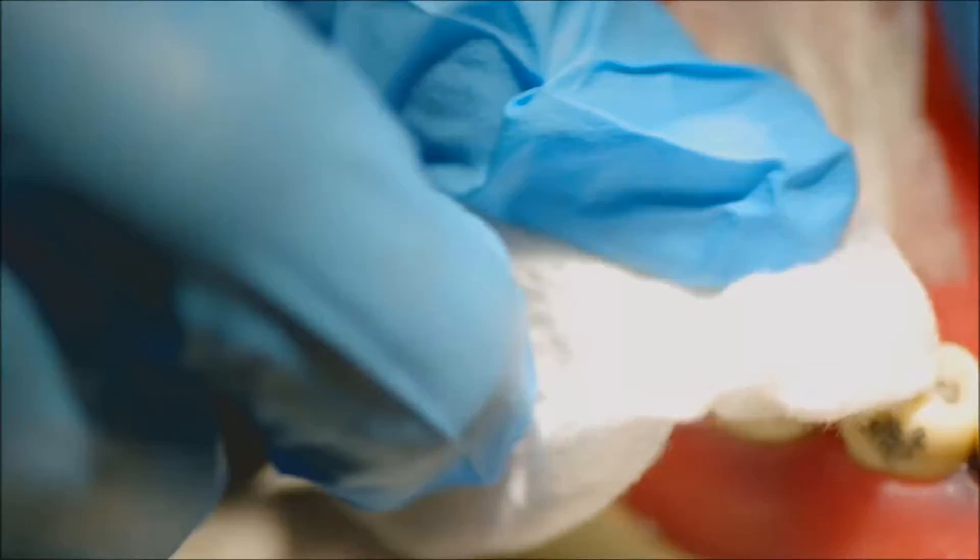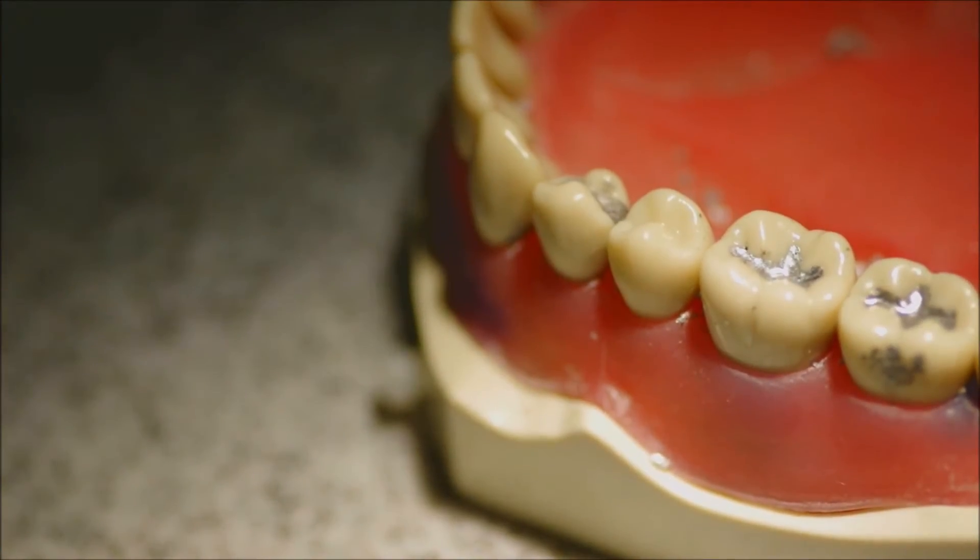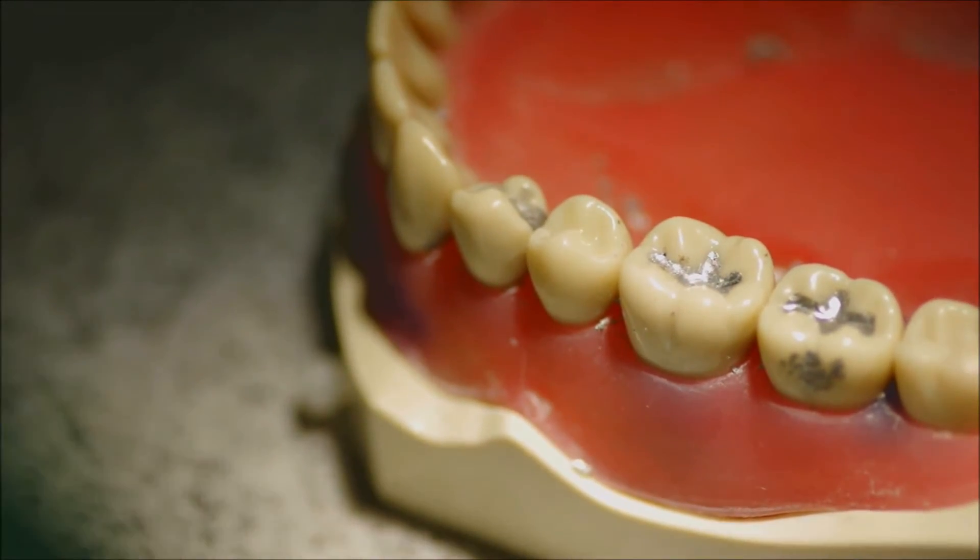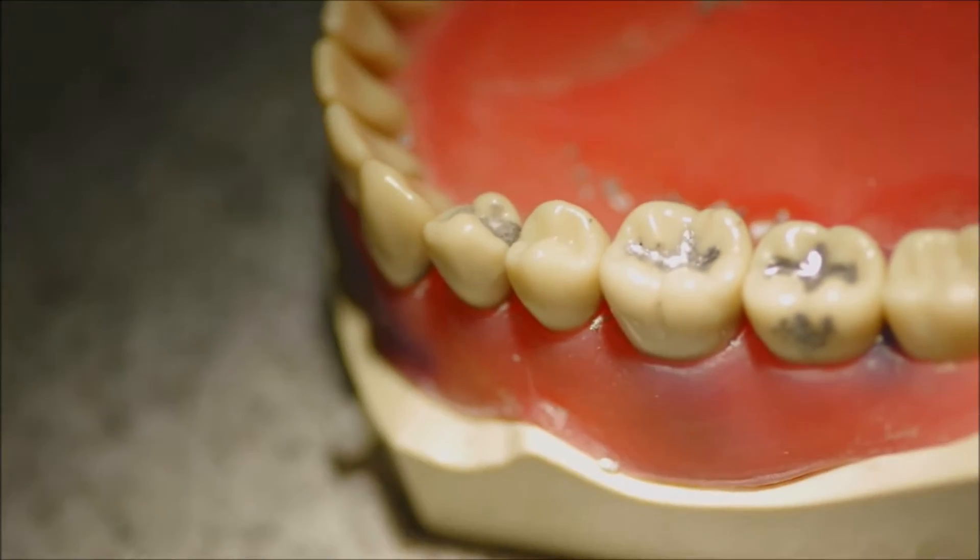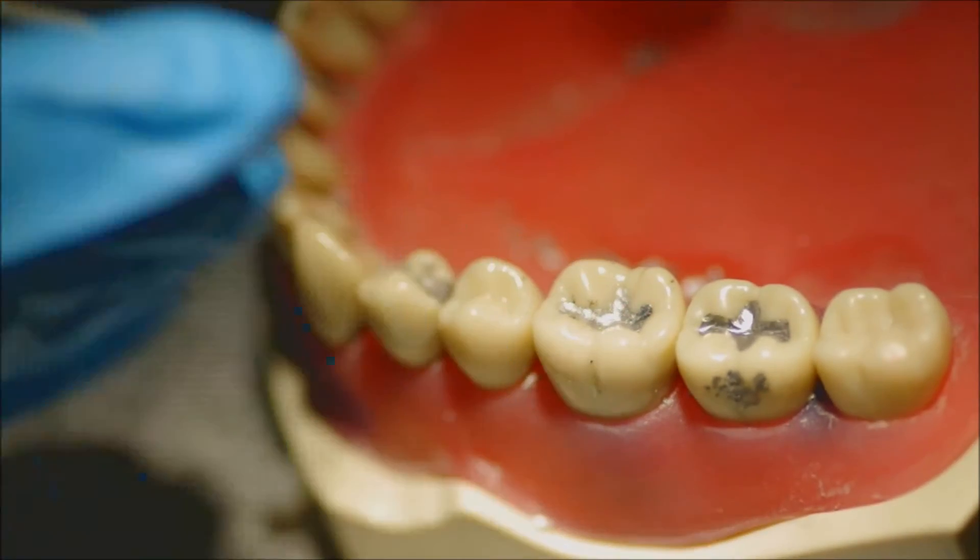This will cause you to lose some of the anatomy that you just created with the acorn. Some of the sharpness of those grooves will be lost because the ball burnisher will push things back into the groove you just created. But you want to do this in multiple steps to ensure that you have a smooth finish with sharp defined anatomy.